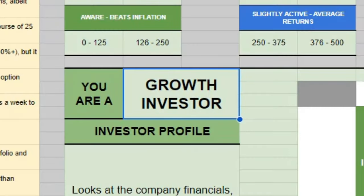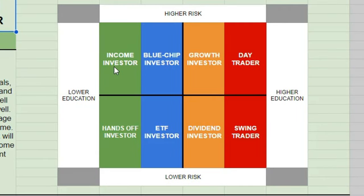On the free spreadsheet — just click File, make a copy, answer the questions, and this box will change depending on your answers and tell you which type of investor you are. We recently went over the hands-off investor. Today we're taking a look at the income investor and what types of investments they'd be making and what yields they could expect.